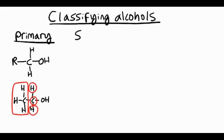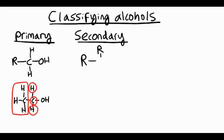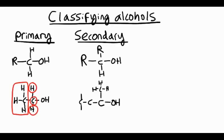Secondary alcohols have two alkyl groups attached to that carbon. Remember, the R groups show a general alkyl group — it doesn't matter what alkyl group; it could be anything: methyl, ethyl, propyl. So there's a carbon with an ethyl group and another ethyl group attached to it, and a hydrogen atom. The two alkyl groups make it a secondary alcohol.